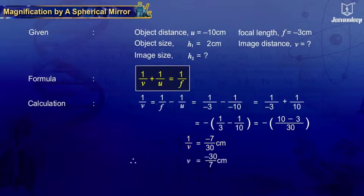Therefore, V is equal to minus 30 upon 7. Therefore, V equals to minus 4.29 cm.